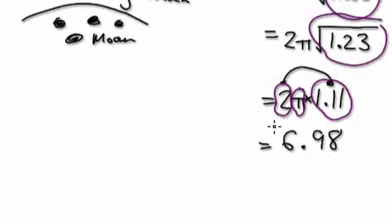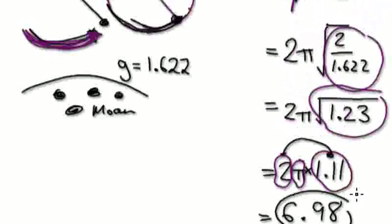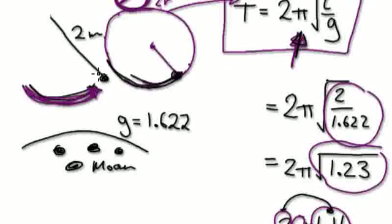6.98. Let's just round up to 7 seconds. So, this number is very close to 7. Let's just say 7 seconds. So, here, this pendulum, if you're on the moon and then you have a length of 2 meters, it would take about 7 seconds to make one swing.